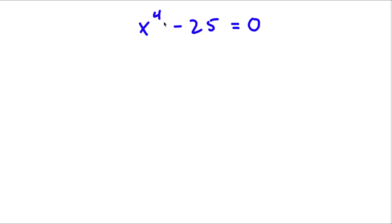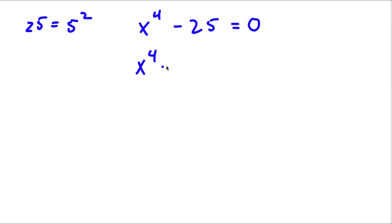Alright, so I have x to the power of 4 minus 25 is equal to 0. Now 25 here is the same thing as 5 squared. So if I replace 25 with 5 squared, I get x to the power of 4 minus 5 squared is equal to 0.